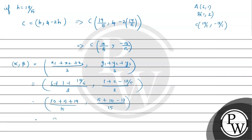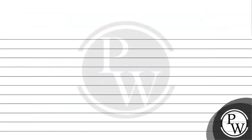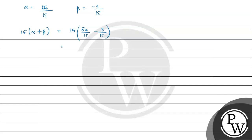So alpha = 54/15 and beta = −3/15. We need to find 15 × (alpha + beta) = 15 × (54/15 − 3/15) = 15 × (54 − 3)/15. The 15s cancel, giving 54 − 3 = 51. So the final answer is 15(alpha + beta) = 51.